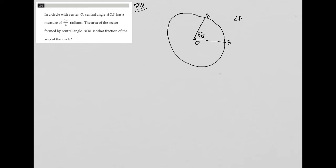So angle AOB is 5π/4, right? Just getting a visual representation of what I'm reading. The area of the sector formed by central angle AOB—this area in here, this slice of the pie—is what fraction of the area of the circle?